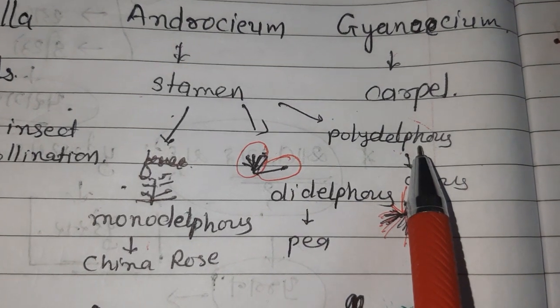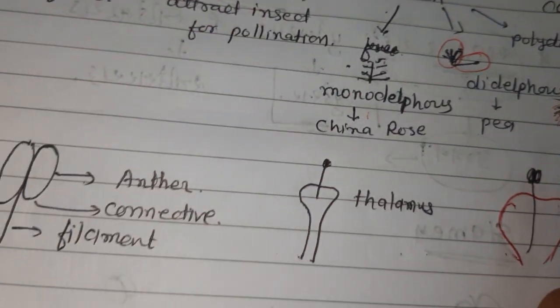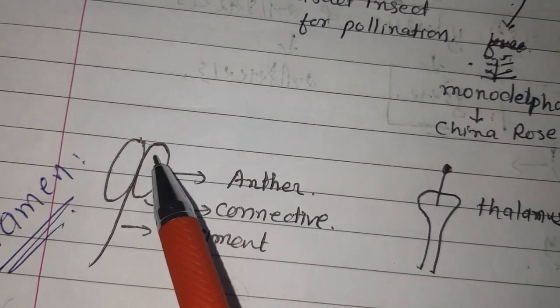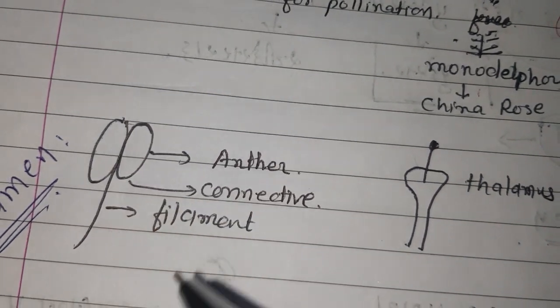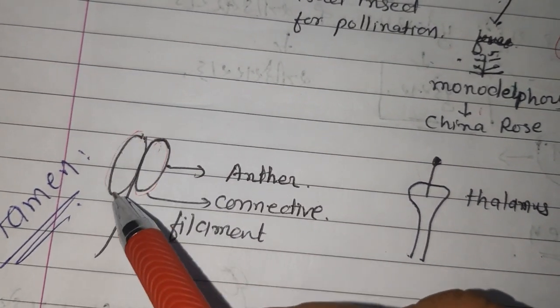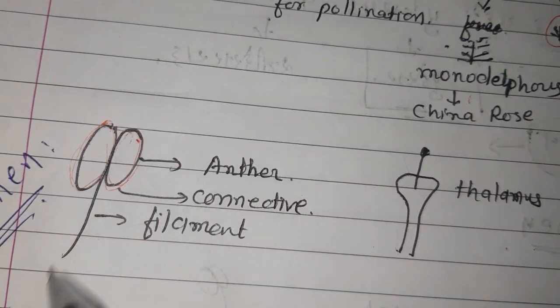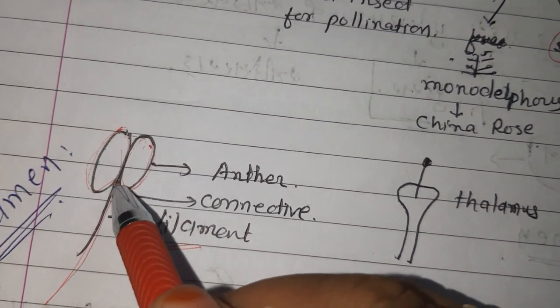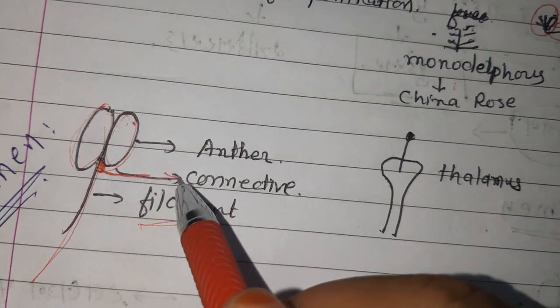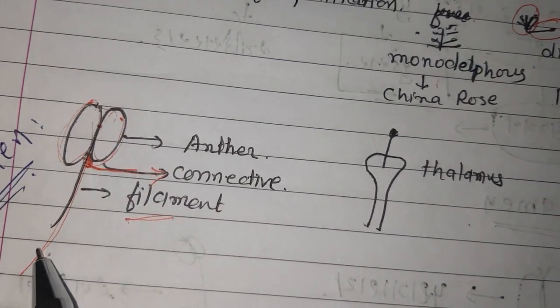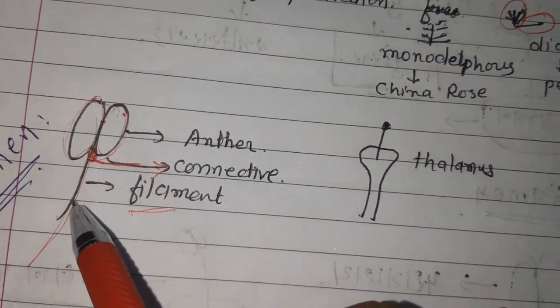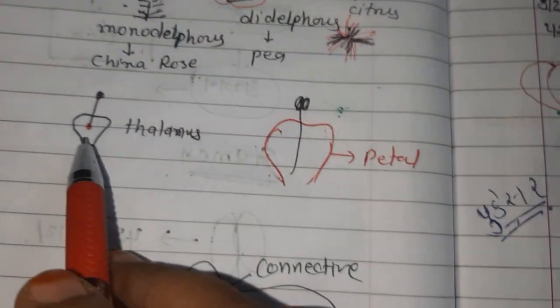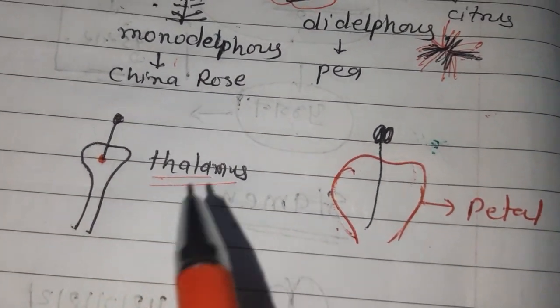This is important from a practical point of view: monodelphous, diadelphous, and polydelphous. Now what is the basic structure of stamen? Stamen mainly possesses anther. We know that anther is bilobed. You can see, this is two lobes. That long part is filament and that joint is known as a connective.